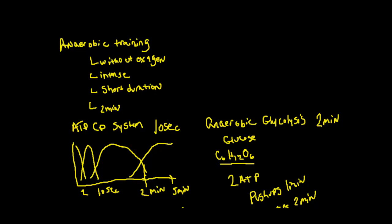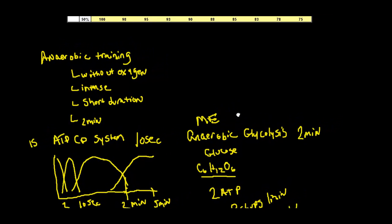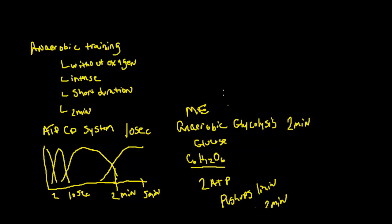These are all linked to health-related fitness components. Muscle strength activities rely on the ATP-CP system. Muscle endurance activities use anaerobic glycolysis to generate energy. Cardiorespiratory endurance training uses the aerobic system to generate ATP. So all three energy systems can be linked to those health-related components.